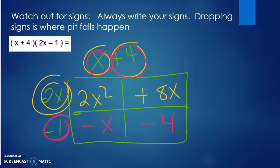I come down my diagonals, which is 2x squared. Positive 8x and minus x is positive 7x. I'll try to mess that one up too. And minus 4.